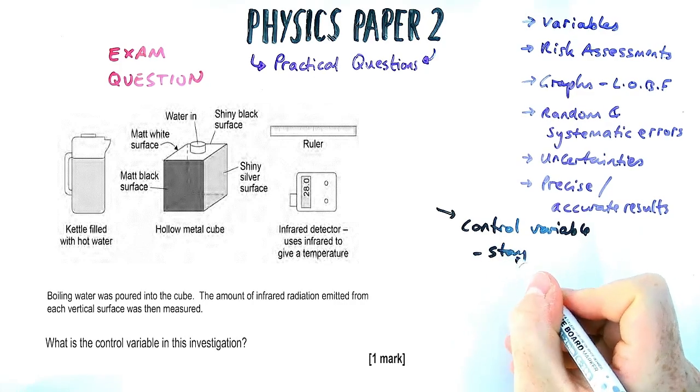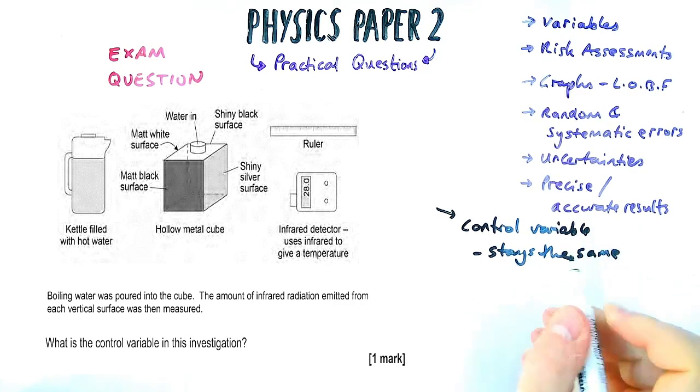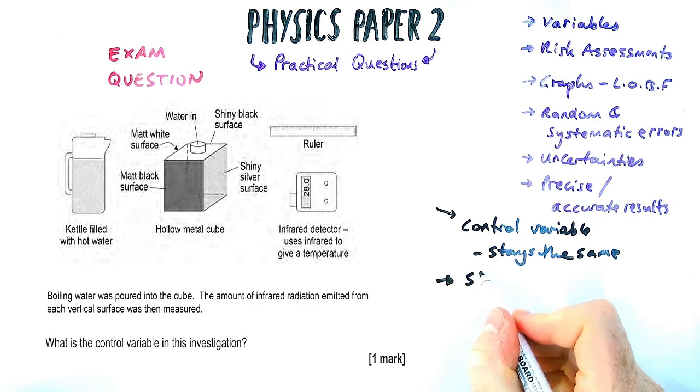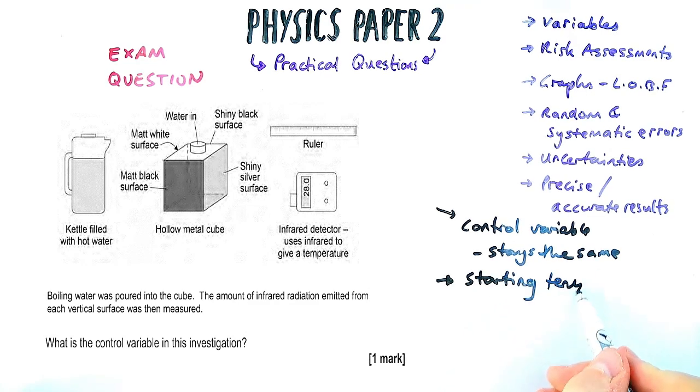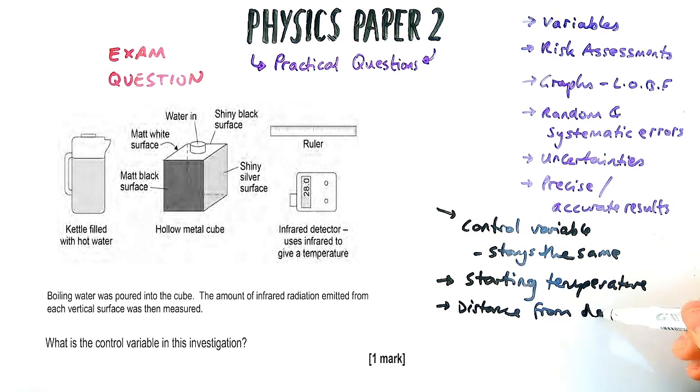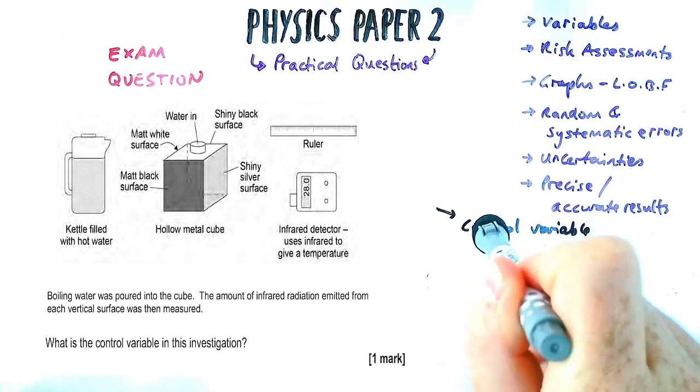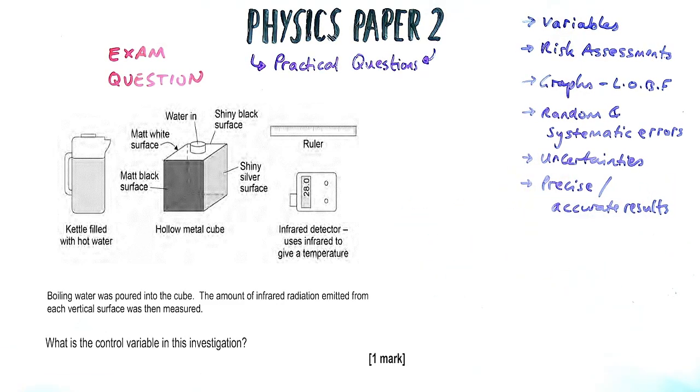Now this question asks us for what is the control variable, so that is the thing that you need to make sure stays the same. In this question there's a couple of options you could talk about. Number one is the starting temperature of the water, and number two is the distance from the detector to the cube. You can't say things like the water or the distance, you've got to be really specific with variables questions, so those would be two to put on your answer.